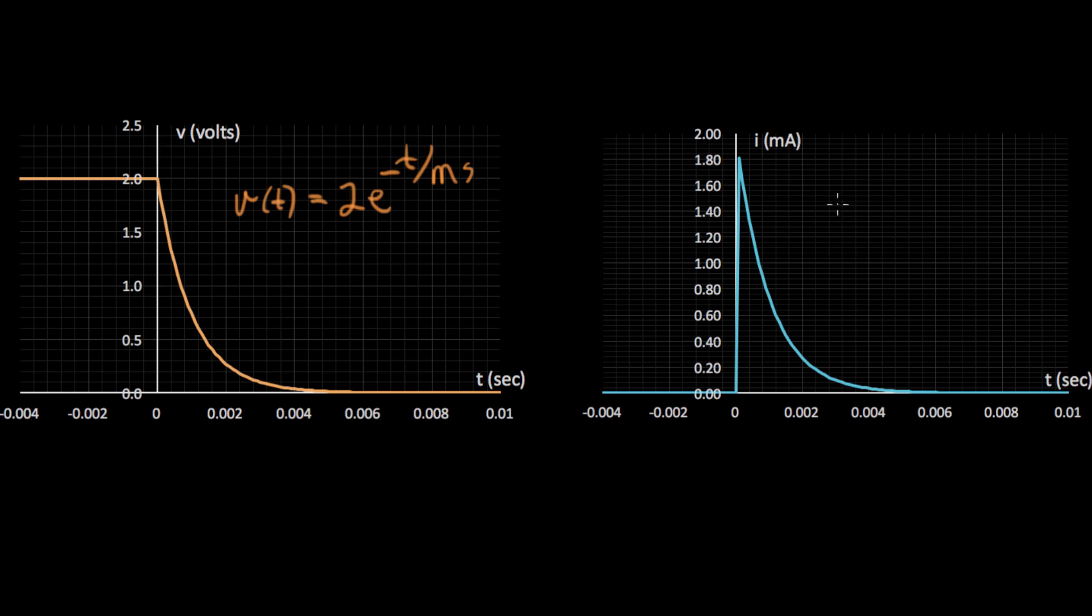And then over here on this side, I, as we said before, starts out at zero in the capacitor. The current in the capacitor is zero. And as soon as we throw open that switch, the charge charges over through the resistor.